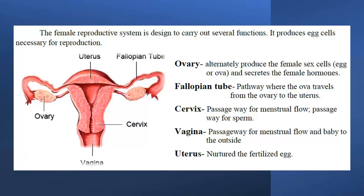Fallopian tube: pathway where the ova travels from the ovary to the uterus. Cervix: passageway for menstrual flow; passageway for sperm. Vagina: passageway for menstrual flow and baby to the outside. Uterus: nurtures the fertilized egg.